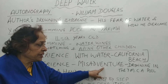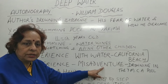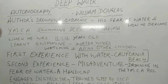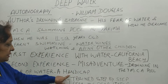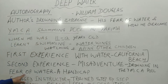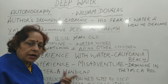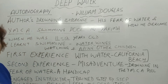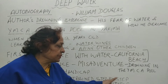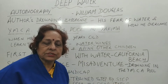His drowning experience in the YMCA pool he calls the misadventure. What was the handicap that he had? The handicap was his fear of water. How did he come out of his fear of water? By getting training from an instructor. How did the instructor teach him? He trained him step by step, in three steps.